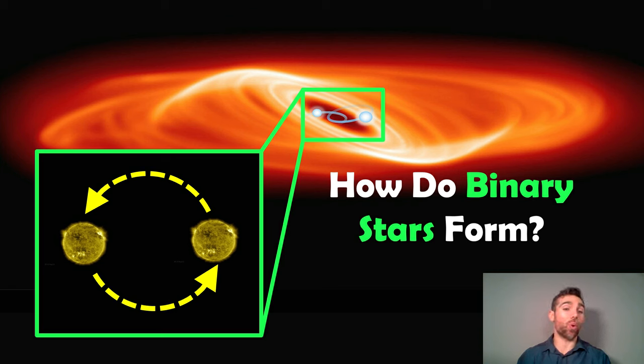Most, or quite a lot of stars, are in multiple star systems—not just binary systems where you've got two, but triple systems, stars in four systems, and even greater. Binary star systems are relatively common, and I wanted to visit how they actually form.